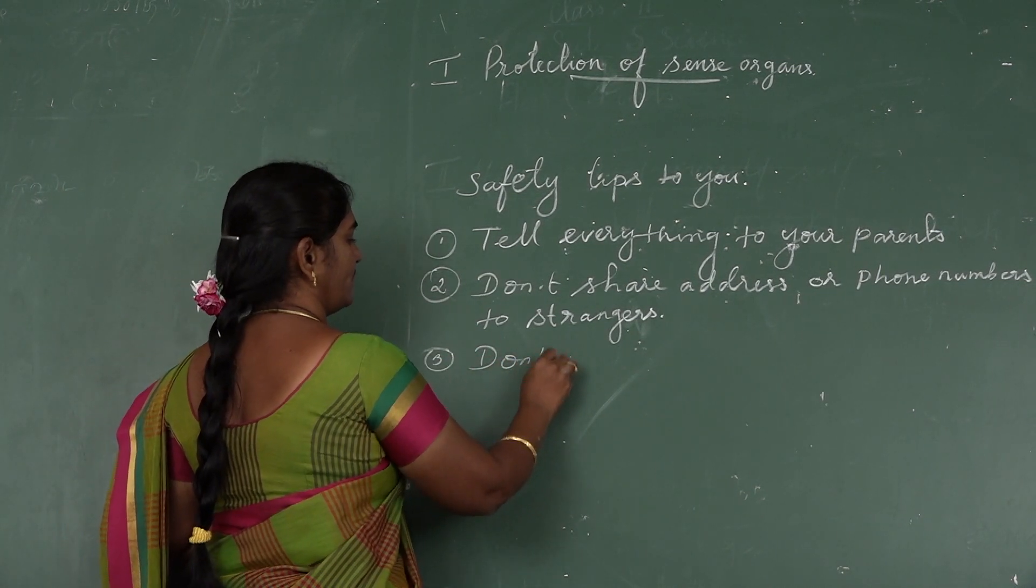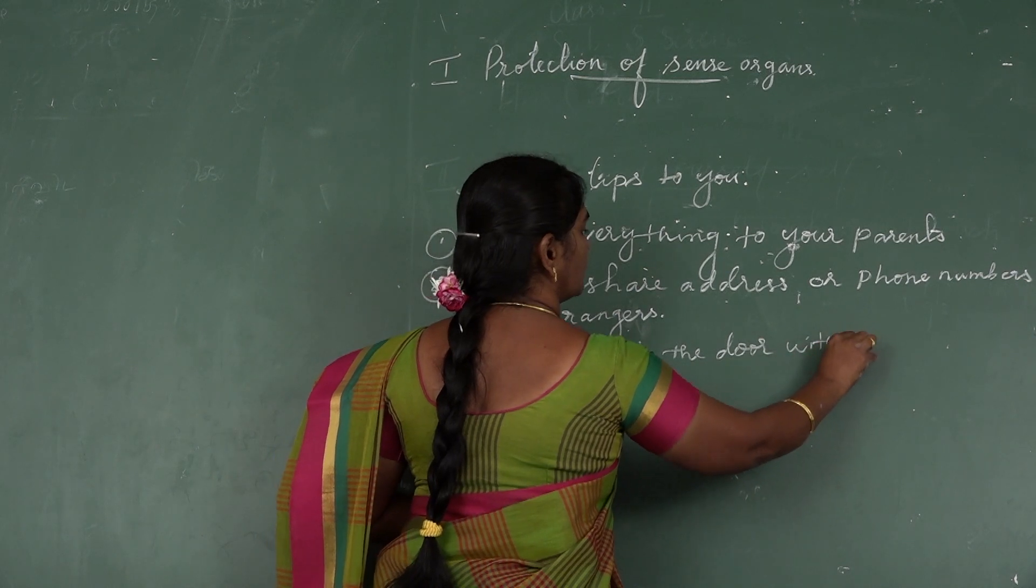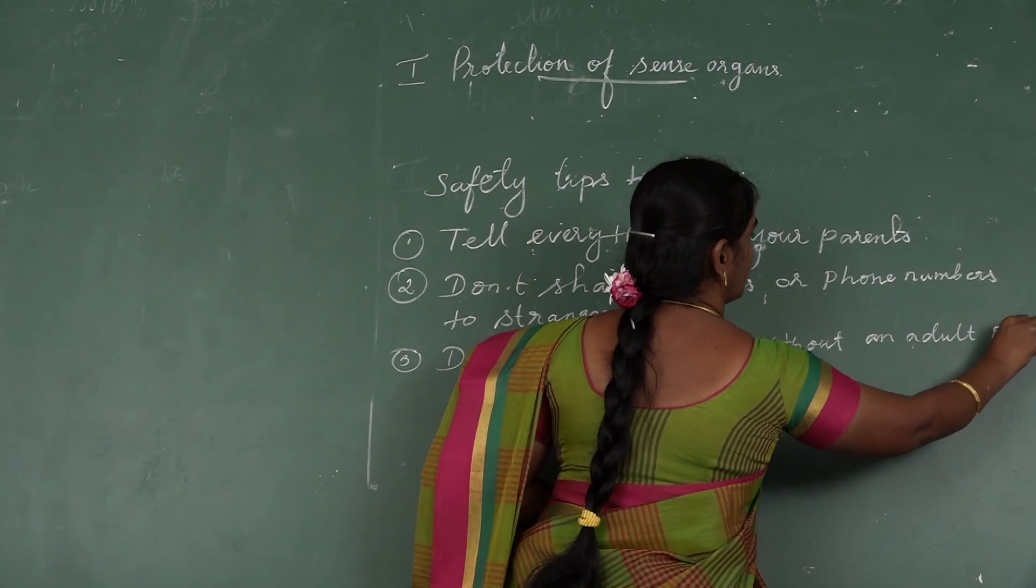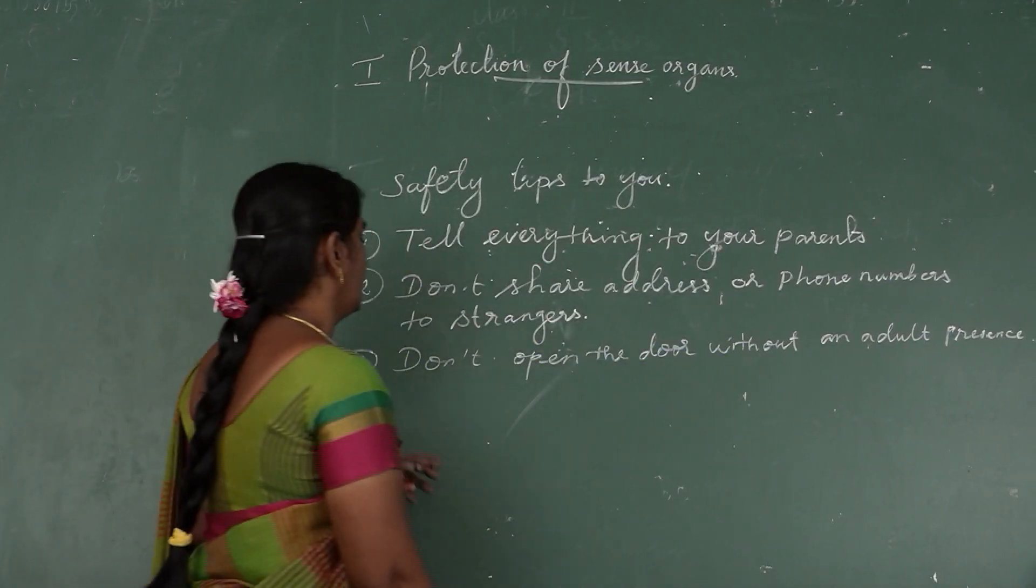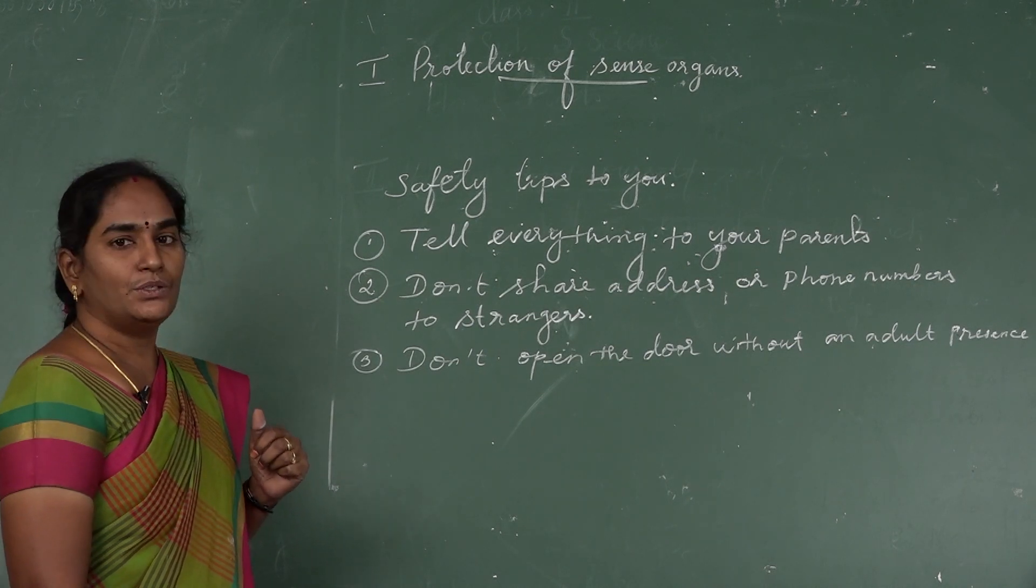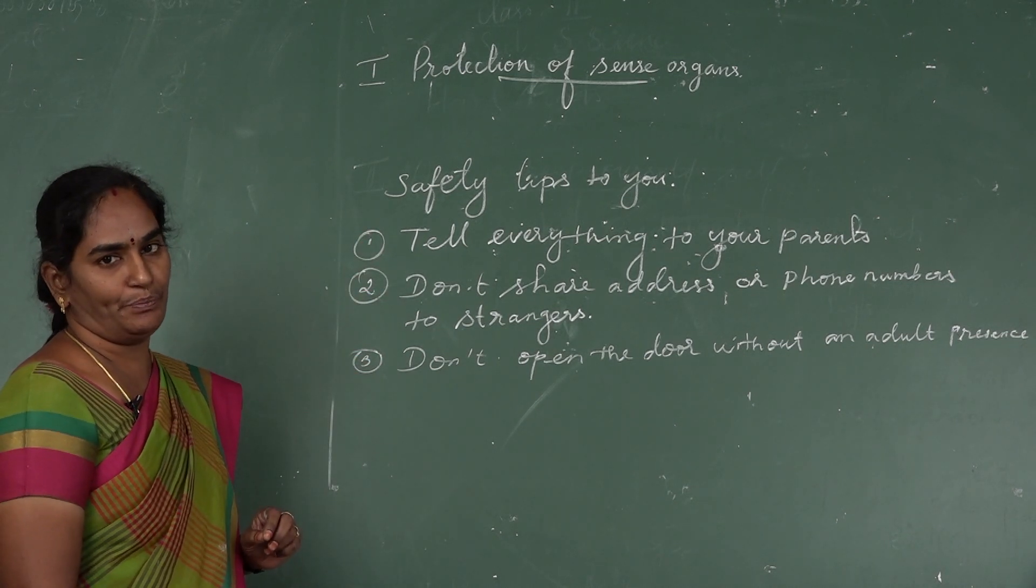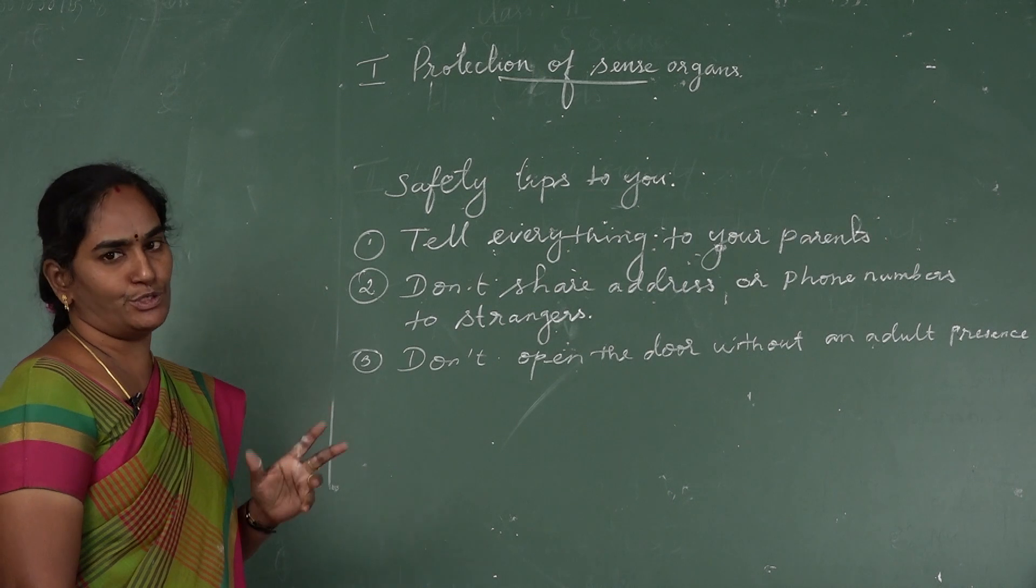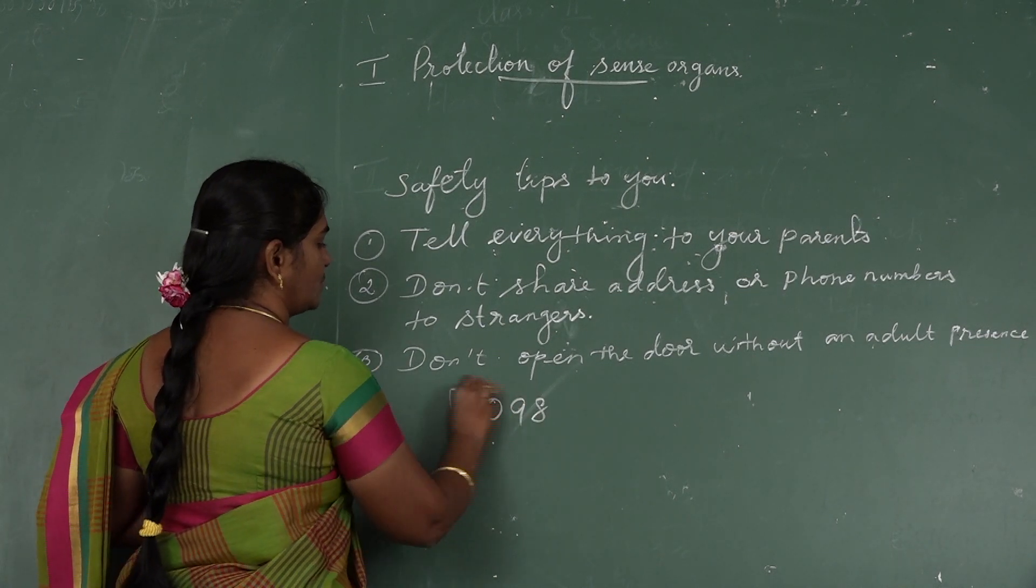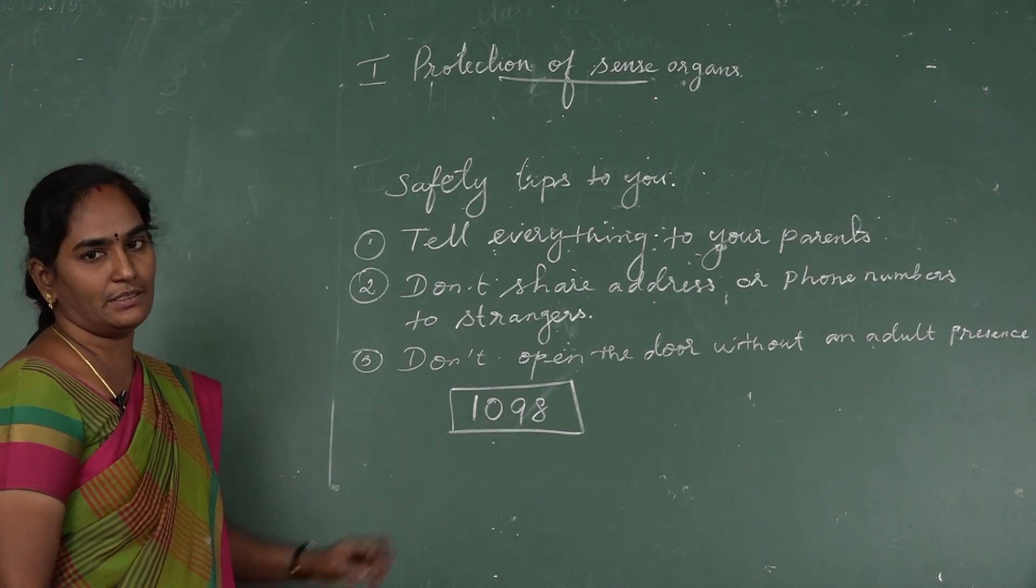Don't open the door without adult consent. Don't eat anything you get from strangers. You want to learn some emergency numbers. These are the steps you want to follow. If anyone abuses you or harasses you, you call 1098 to get help.